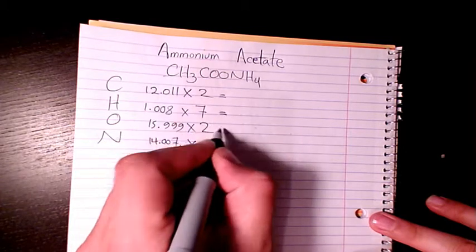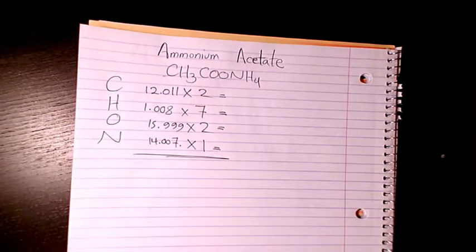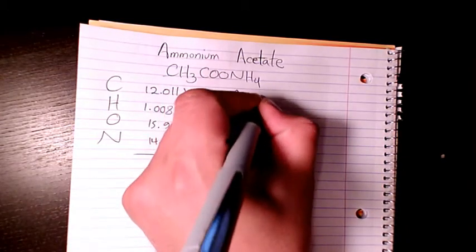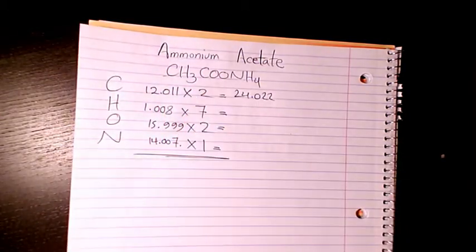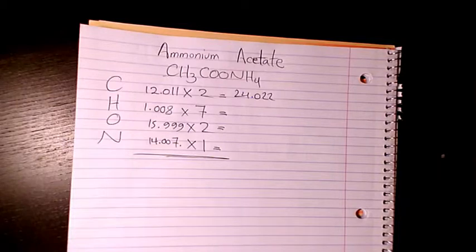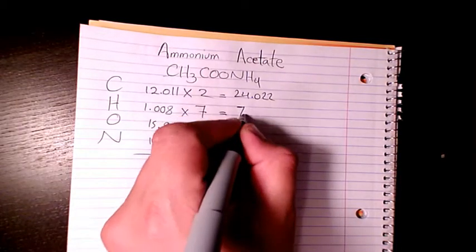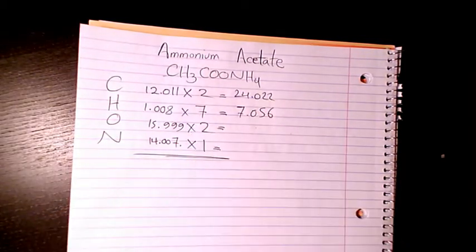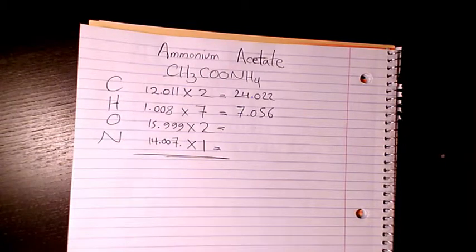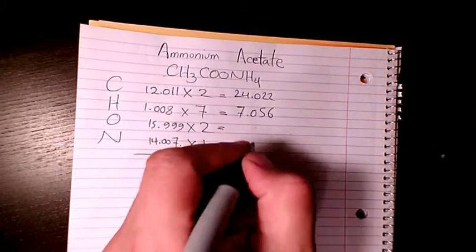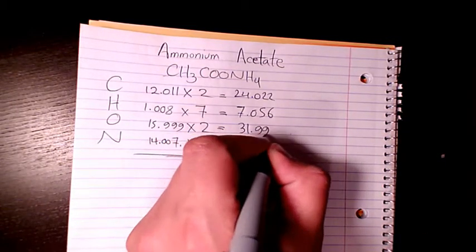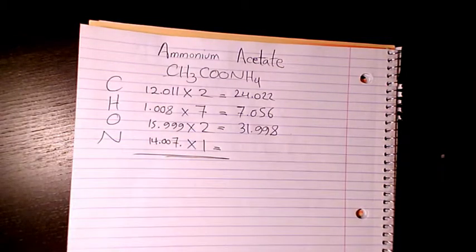So two times 12.011 equals 24.022. Then 1.008 times 7 equals 7.056. 15.999 times 2 equals 31.998. And 14.007 times 1 is 14.007.